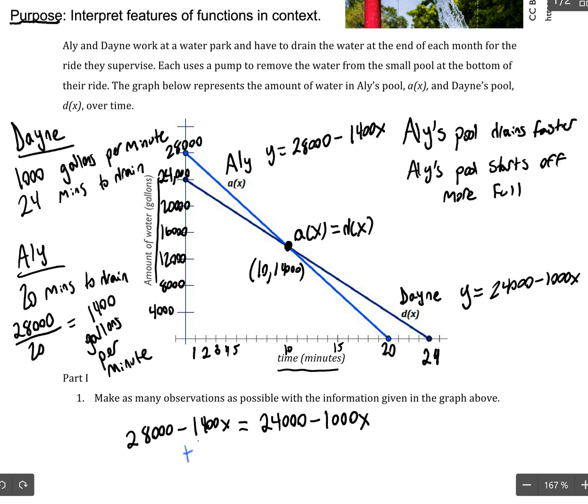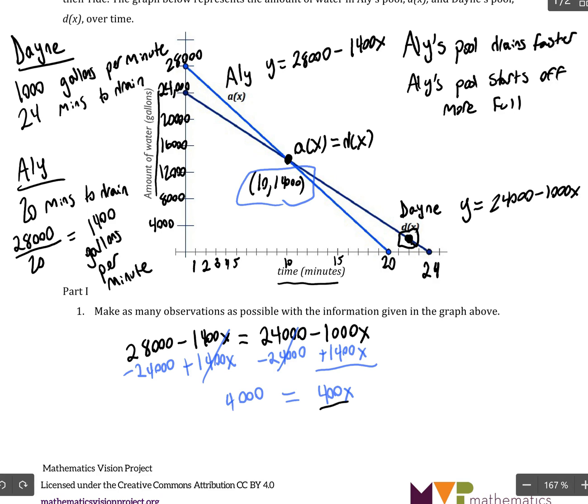So, we could add 1,400X on both sides and at the same time subtract 24,000 on both sides of the equation. And so, those will cancel out, those will cancel out. And I will get 400X equals 4,000. And I can divide both sides by 400 to get that X equals 10.